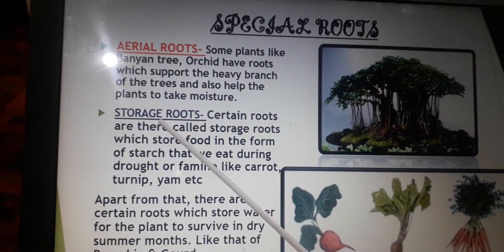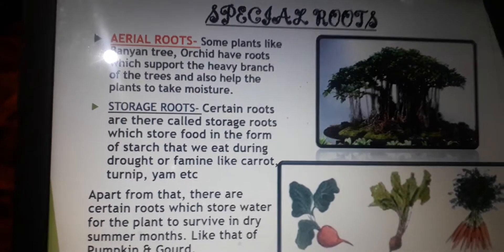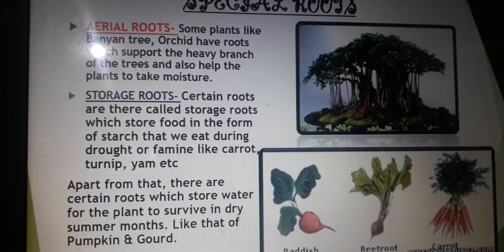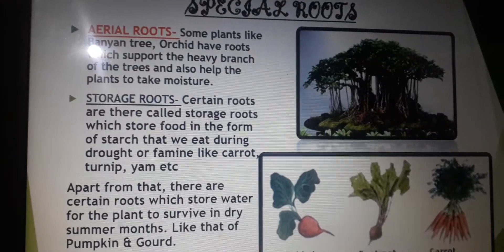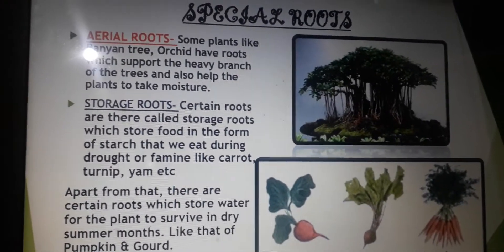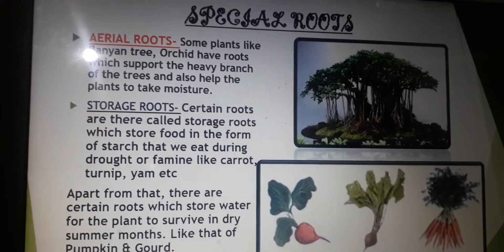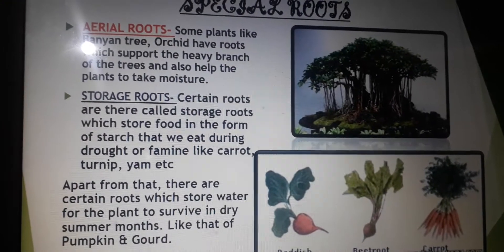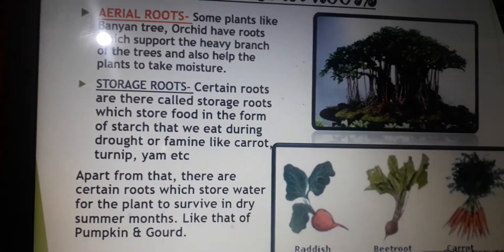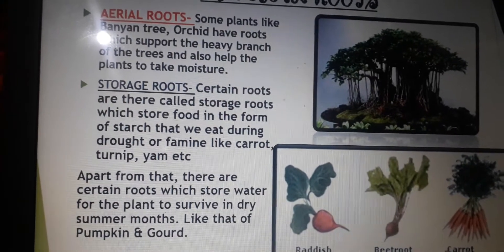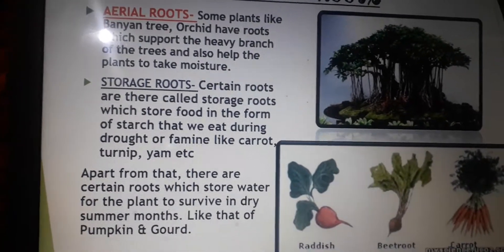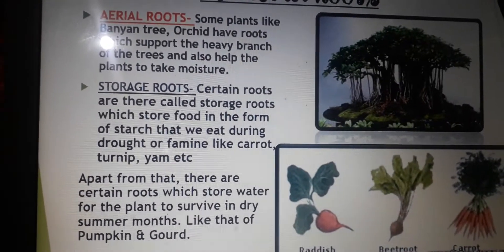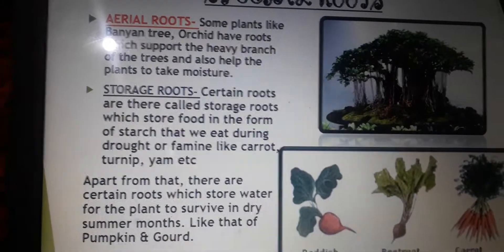Next is storage roots. There are certain roots called storage roots which store food in the form of starch. During shortage of food or natural disasters like drought or famine, people use these roots as food. There are also roots of some plants which store water, making it easier for the plant to survive long dry summer months, like pumpkin and gourd.